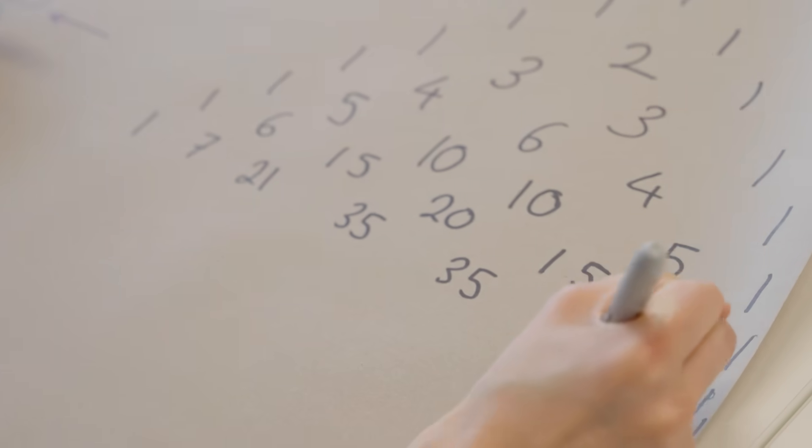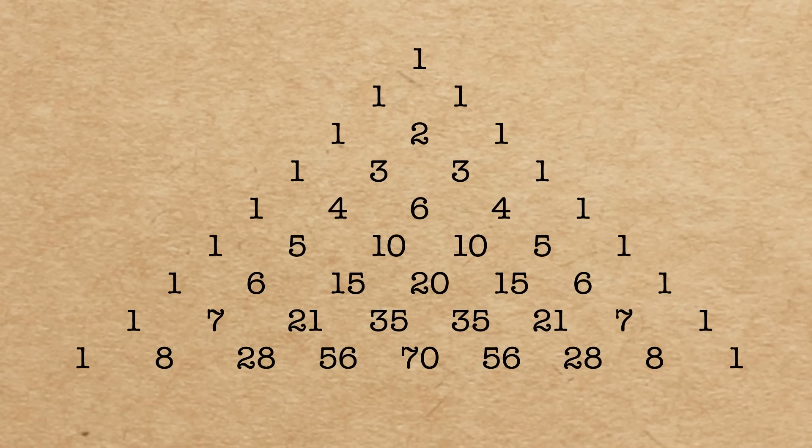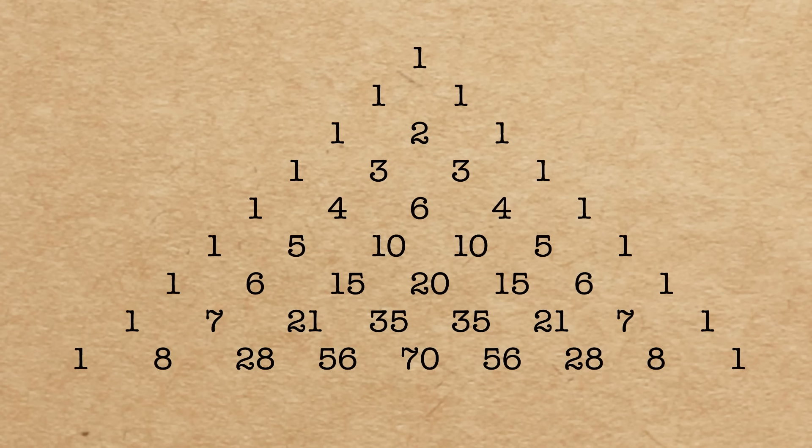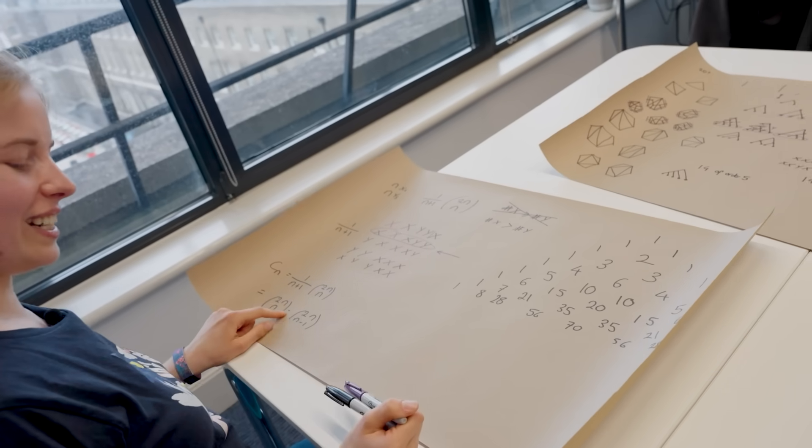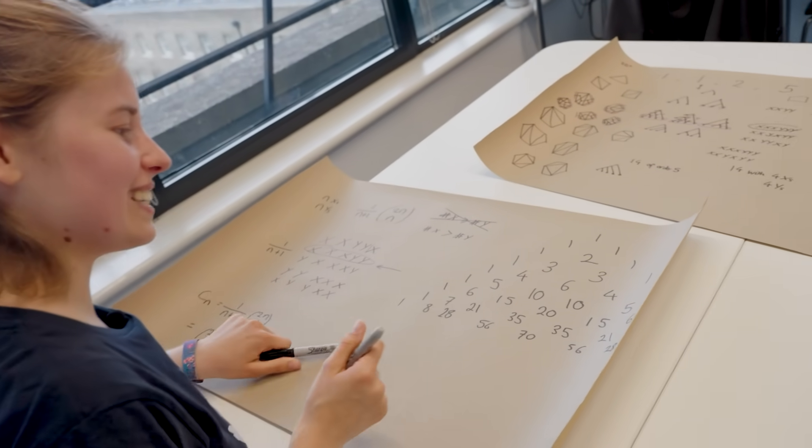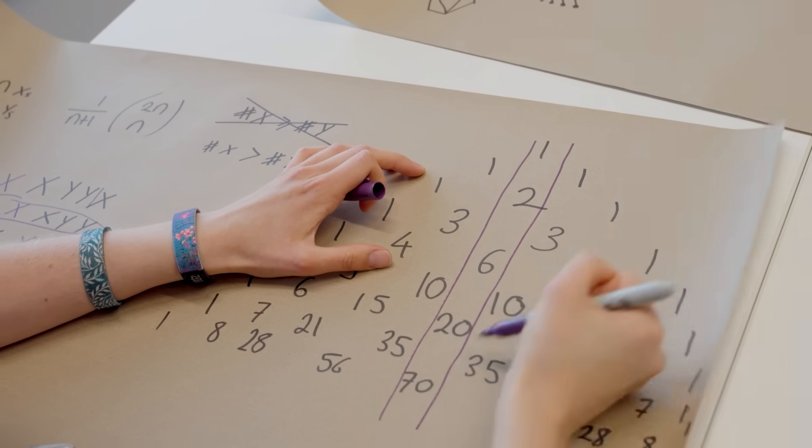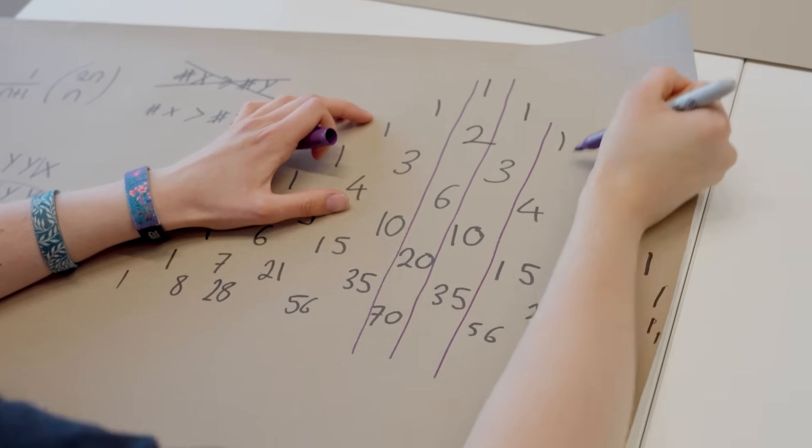Okay, running out of space slightly, but this will do. The question is where do the Catalan numbers appear in Pascal's triangle. And this little minus sign is the key because they actually appear with this column and subtracting this column.